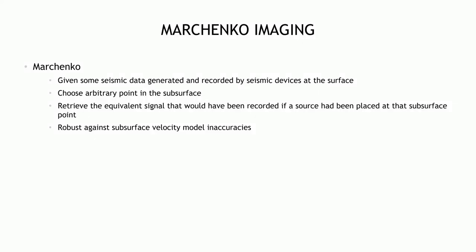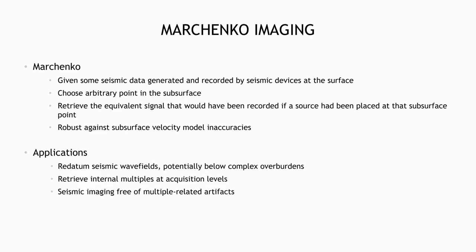Marchenko in a nutshell: given some seismic data generated and recorded by seismic devices at the surface, you pick an arbitrary point in the subsurface, and the goal is to retrieve the equivalent signal that would have been recorded if a source or receiver had been placed at that focusing point in the subsurface. This method is quite robust against subsurface velocity model inaccuracies, and applications include redatumming seismic wave fields potentially below complex overburden, enabling target imaging and target FWI. We can also retrieve internal multiples at acquisition levels, which allows us to produce seismic images free of multiple-related artifacts.